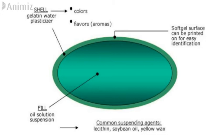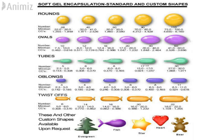They can also be printed with the company's logo for identification, and a solution or suspension is filled inside the capsule. Soft gelatin capsules are available in different shapes like round, oval, tube, oblong, and twist-offs, and shapes can also be customised depending upon the request.